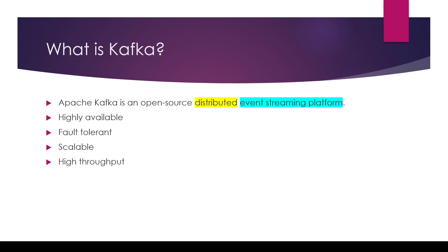Let's start with the basic question: what is Apache Kafka? Straight from the documentation, Apache Kafka is an open-source distributed event streaming platform. 'Distributed' means Apache Kafka can run on multiple nodes and multiple machines — it could be a container, a virtual machine, or a physical machine.